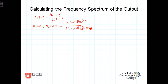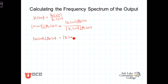Now, we can determine the output — its magnitude and phase theta out of jω — by multiplying both sides of this equation by the spectrum of the input, magnitude and phase. This gives us the magnitude of V in of jω at angle theta sub I of jω, times the transfer function written in its polar form: magnitude of H of jω at angle theta sub H of jω.